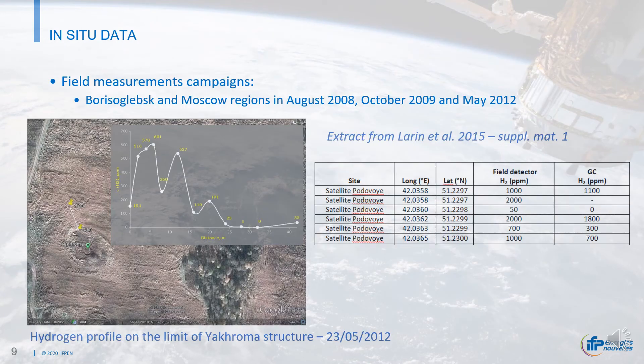These in-situ analyses — for example, field campaigns performed in Russia and published by Laurent et al. — must be used to constrain the interpretation of satellite information.